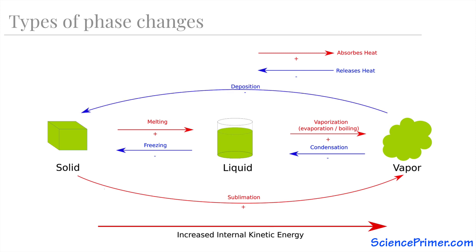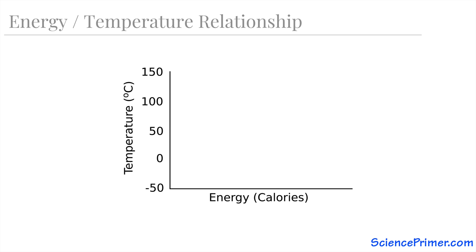Each of these phase changes shares a characteristic. During the transition from one phase to another, the heat absorbed or released is not associated with temperature change. To understand this, let's take a look at a chart showing temperature on the y-axis and energy as calories on the x-axis, remembering that a calorie is the amount of energy required to raise one gram of water one degree Celsius.